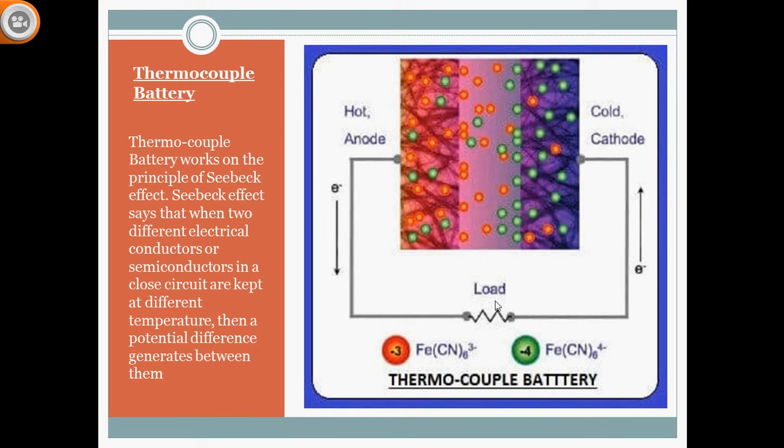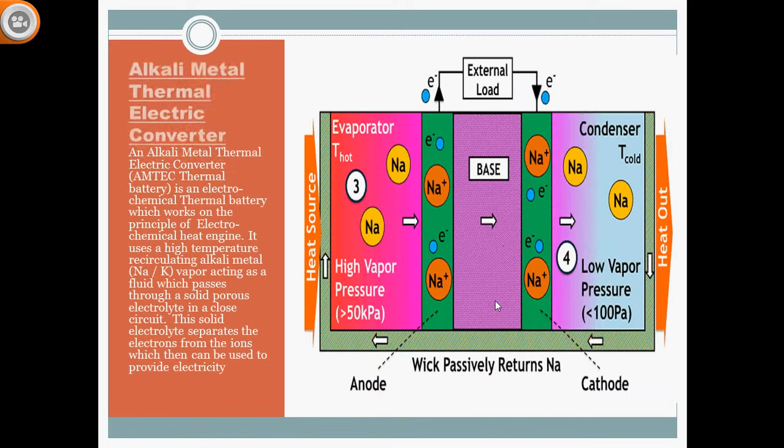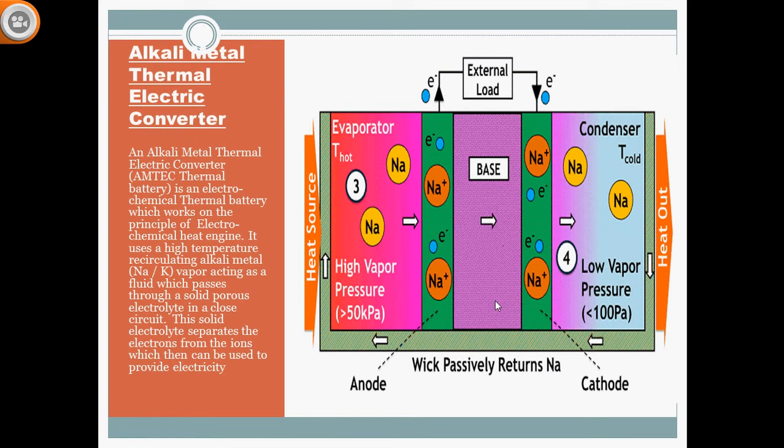This is one type of thermocouple battery, known as a thermal battery because it works on heat. The second type is the alkali metal thermoelectric converter (AMTEC). These batteries work on the principle of an electrochemical heat engine.